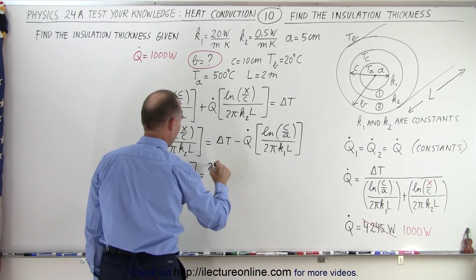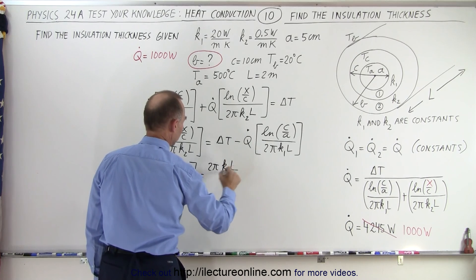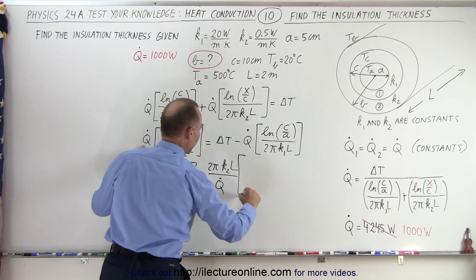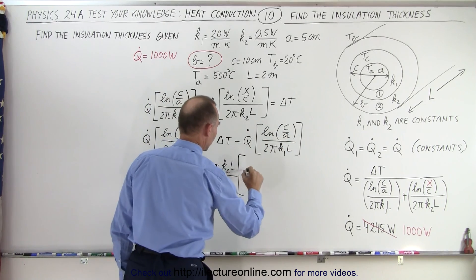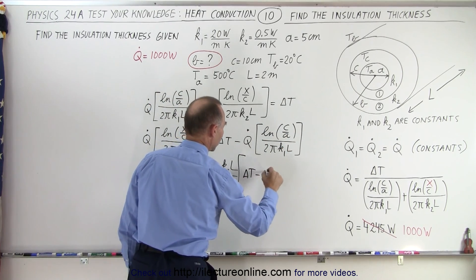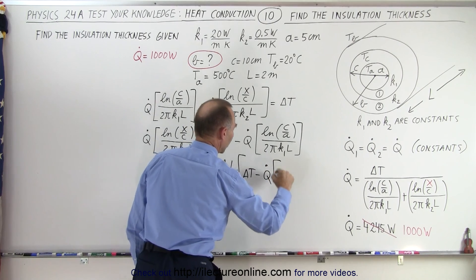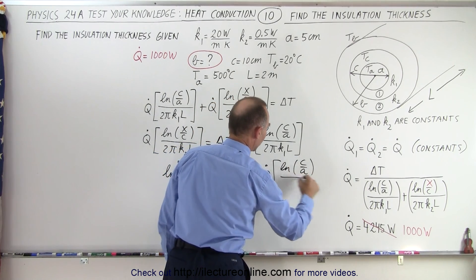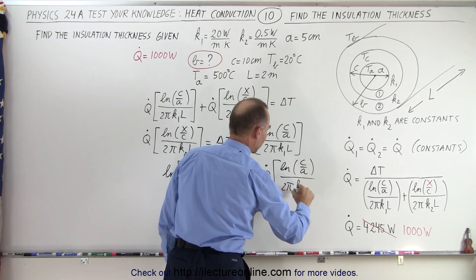So we have 2 pi k2 l divided by q dot multiplied by everything that's on the right side, which is delta t minus q dot times the natural log of c over a, divided by 2 pi k1 l.